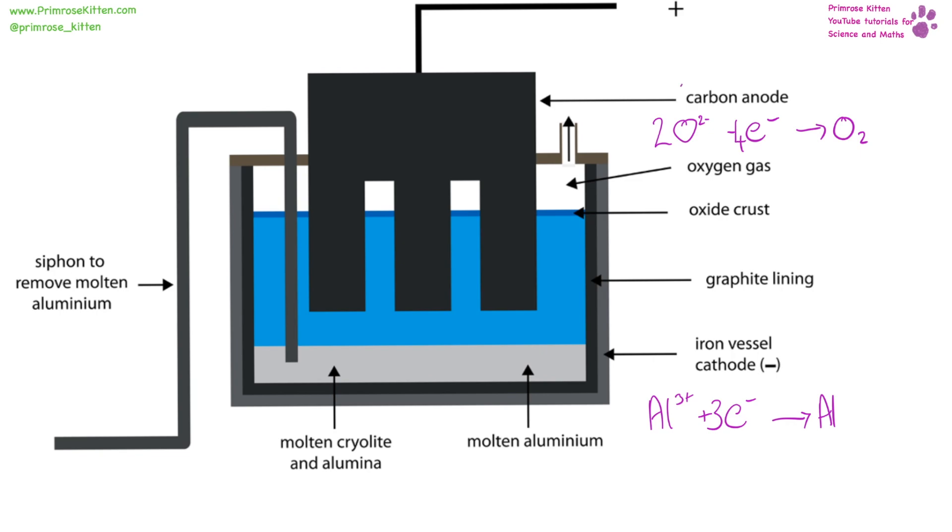Eventually, the oxygen gas will react with the carbon electrode and we are going to lose the electrode as carbon dioxide. So the carbon dioxide will wear away the electrode eventually, so this will need to be replaced. The molten aluminium collects at the bottom and can be taken off like that. And that is how we purify aluminium.